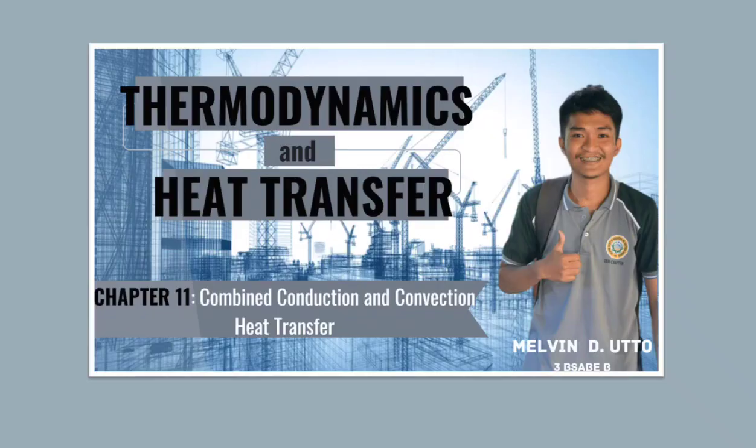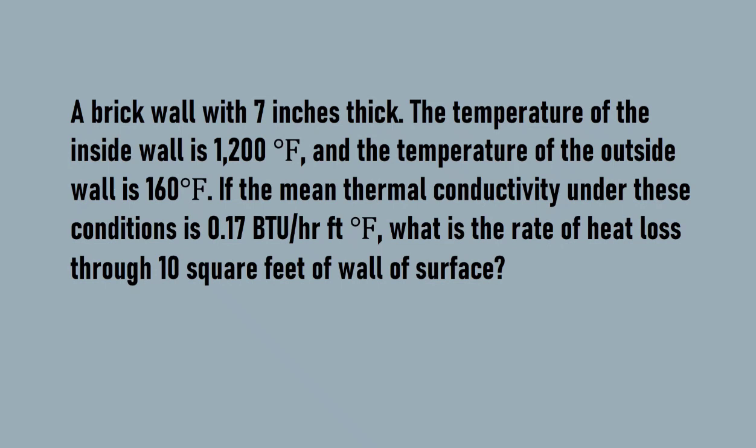Welcome to this tutorial. We are going to solve a problem from Chapter 11, Combined Conduction and Convection Heat Transfer. A brick wall is 7 inches thick. The temperature of the inside wall is 1200°F.